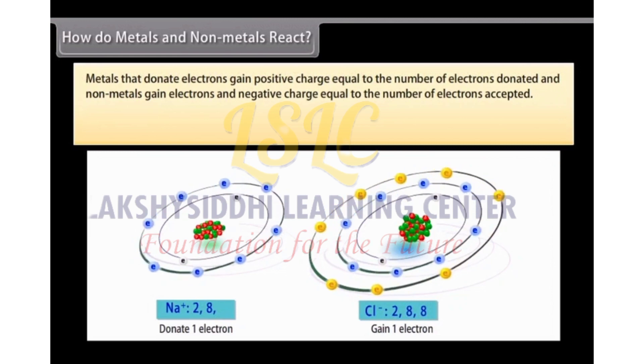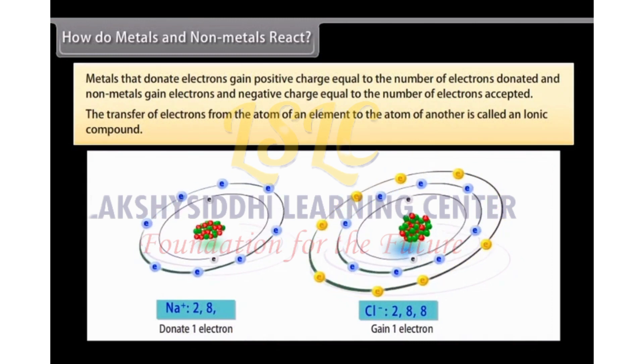As a result of this, both these atoms form the structure of an inert gas. The transfer of electrons from the atom of an element to the atom of another is called an ionic compound.